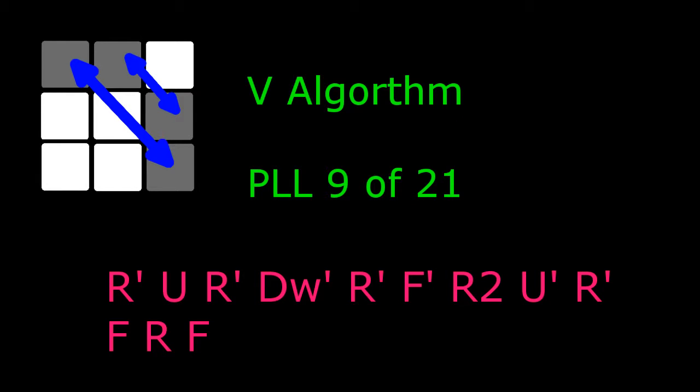Hey everyone! Going to continue our PLL tour with the V algorithm. It takes adjacent pair of edge and corner and swaps it with another adjacent pair of edge and corner.